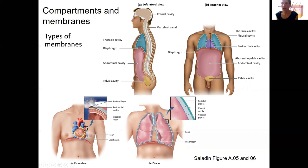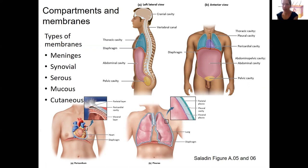The types of membranes are: meninges, which surround the brain and spinal cord — we'll come back to those with the nervous system. Synovial membranes are around synovial joints — we'll cover those with joints. The last three I'll talk about today are serous membranes, mucous membranes, and cutaneous membranes. Cutaneous is your skin, so that will be in a separate video. I'll cover serous and mucous membranes more briefly.